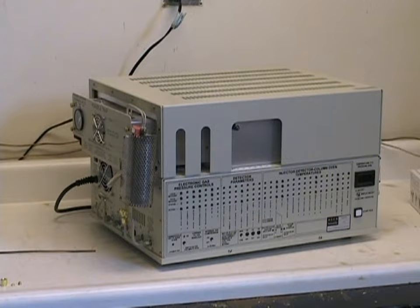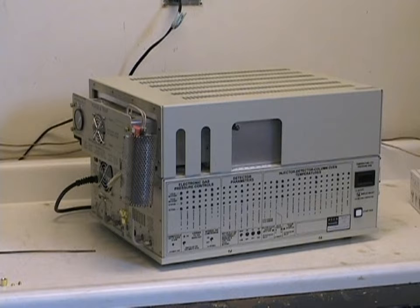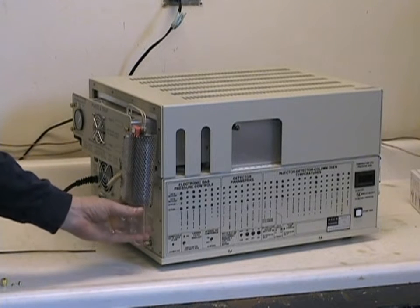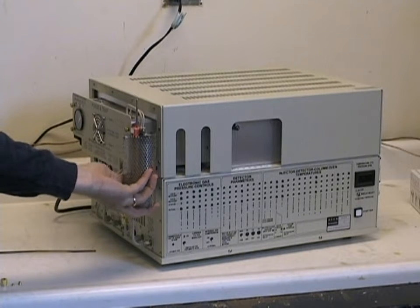This is the Buck Scientific series 910 gas chromatograph configured with the heated static headspace sampler, where your VOA vial containing your sample will go into the holder, and then you will have an automated sample preparation.